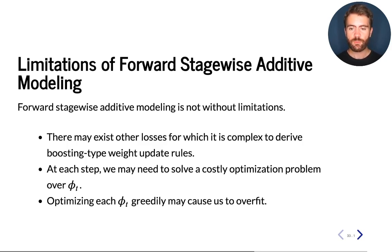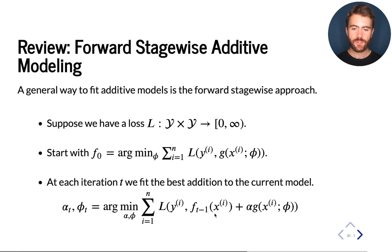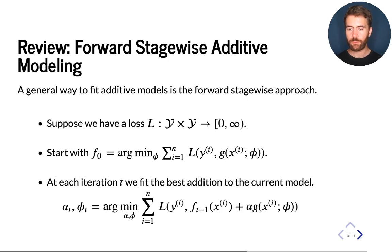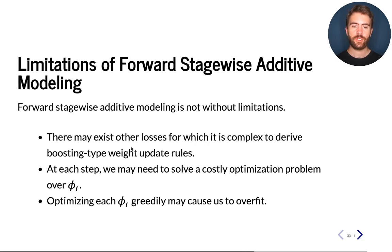This approach has limitations. For AdaBoost, L2Boost, or LogitBoost, we derived manual update rules by hand for the alphas and weights. Defining these update rules for each new loss is laborious and may not always be possible. Also, if we solve the optimization exactly at every step, the approach may be too greedy — we could overfit if the model G is too flexible.